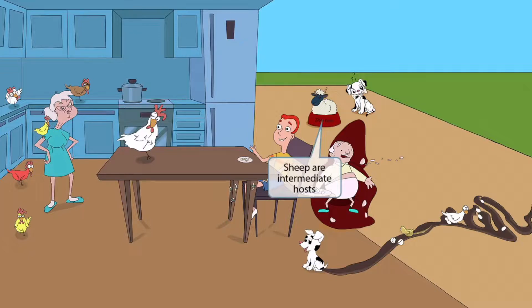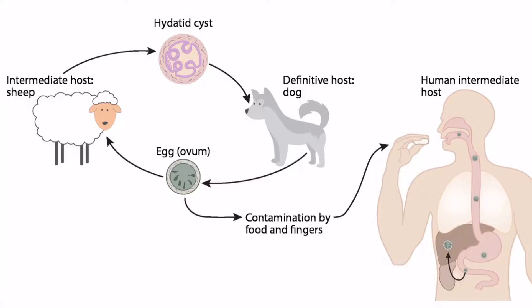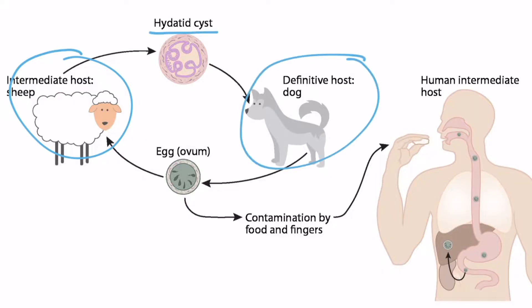We can see another dog on the patio. In its dog food dish is a little sheep, which apparently thought the dish was a good place to take a nap — this obviously confuses the dog. This represents how sheep are an intermediate host for the life cycle of Echinococcus granulosus. Sheep eat the eggs and get the hydatid cysts, then dogs eat parts of the sheep, continuing the life cycle. The dog can then release more eggs, which can be eaten by humans.